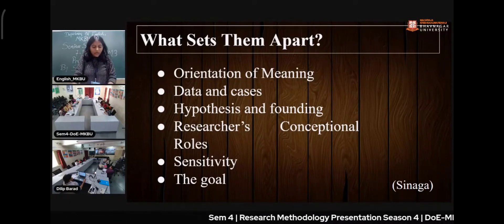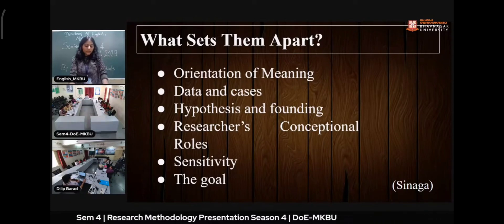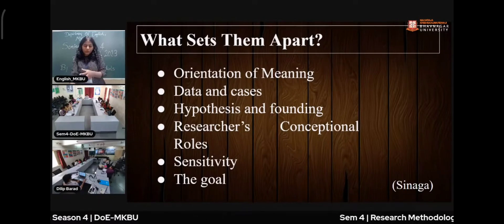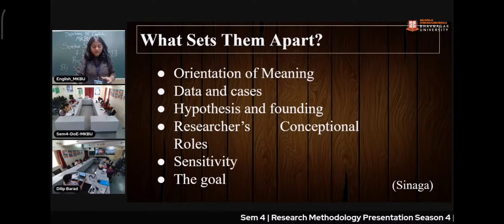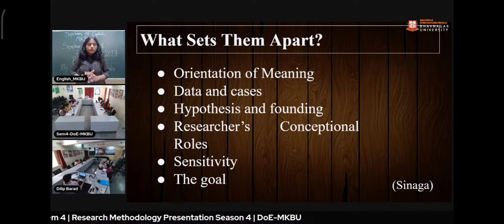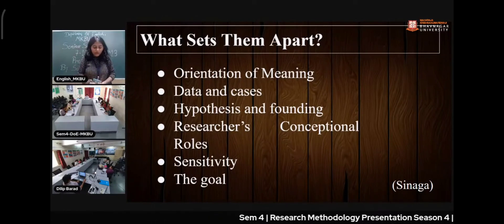The second point is data and cases. In qualitative research, the form of data can range from small to many and can be applied broadly. In quantitative research, there is a particular number of data points, and while many responses may be collected from people, the findings will be applied to a few specific cases.